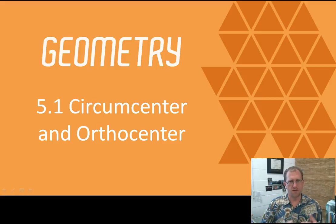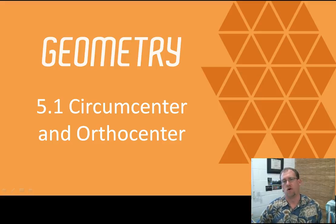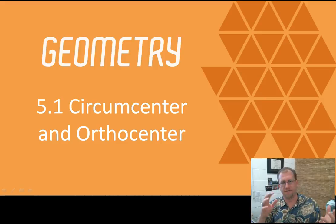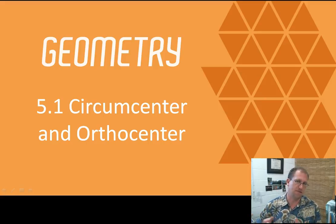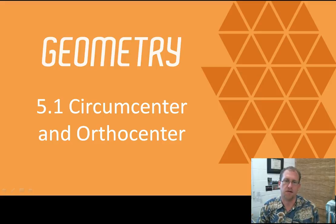We're still in Triangle Land, and we are looking at how to find various kinds of centers of triangles. A triangle's not as easy to find a center of as like a circle or a square, where things are regular and normal-shaped. Triangles can be any kind of shape, any kind of angle measures, and all different kinds of triangles. So how do you find the center of one of those oddly-shaped things? Well, there are three ways. The first two we're going to cover in this lecture — Circumcenter and Orthocenter.